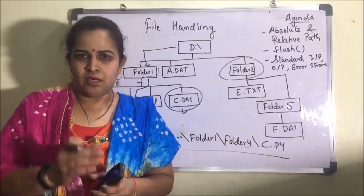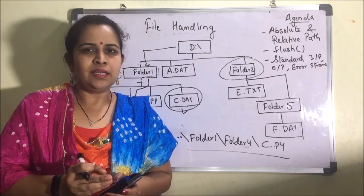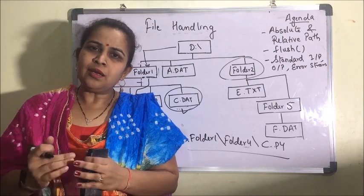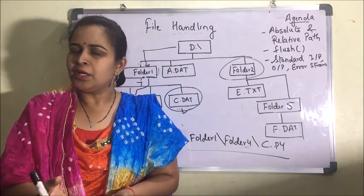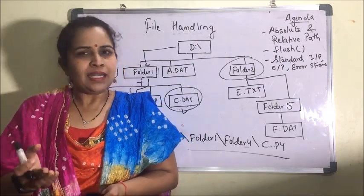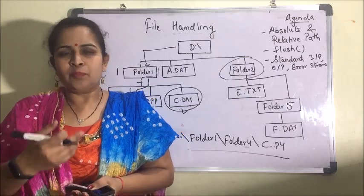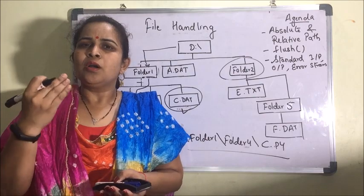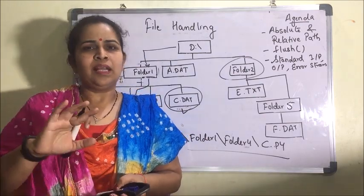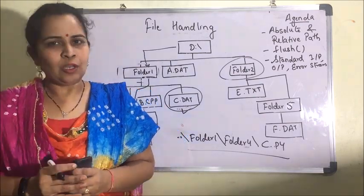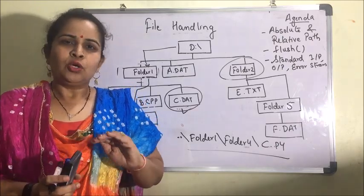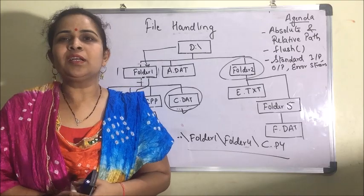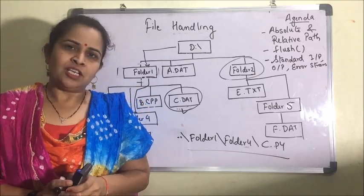Suppose I have given a command to write something inside a file. When we close the file, until that time the particular data is in memory, that is in the buffer. If by chance some error or disk error happens, the data may be lost. So if we want our data to be written to the file before we close it, we use the flush function.